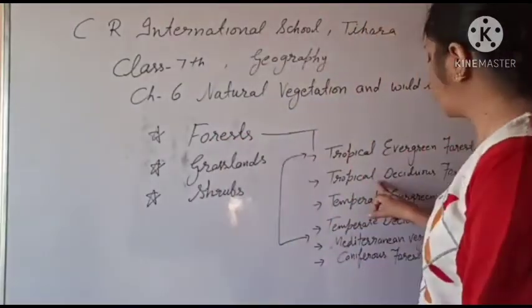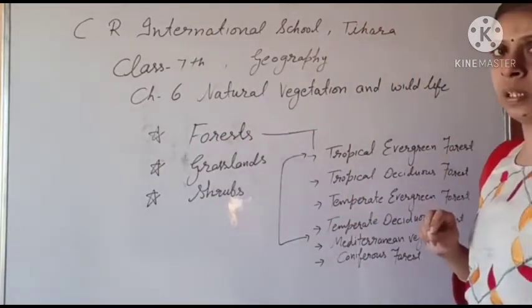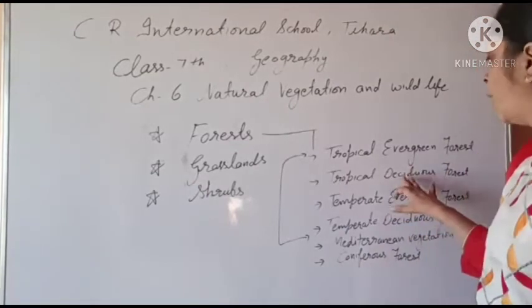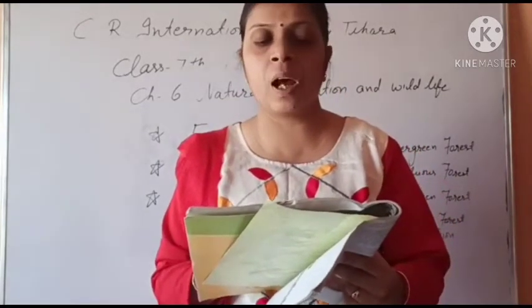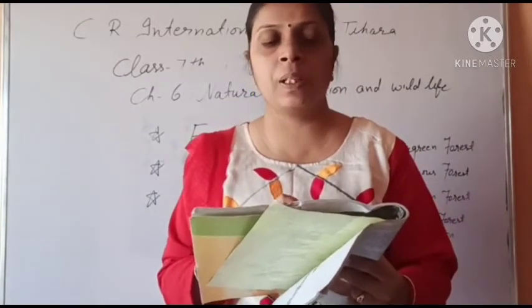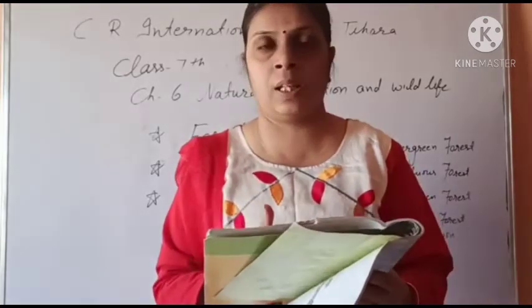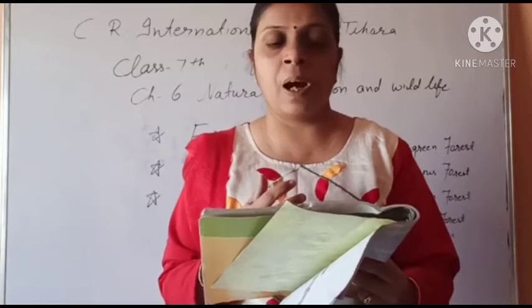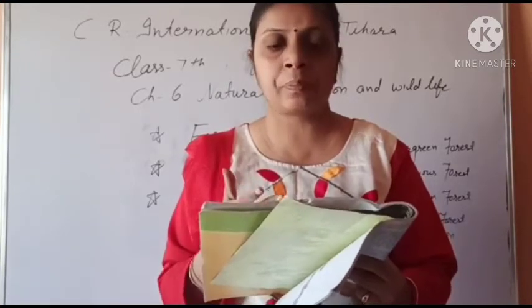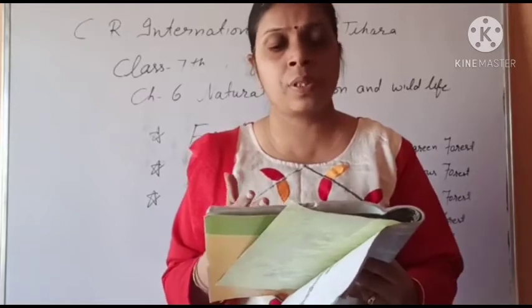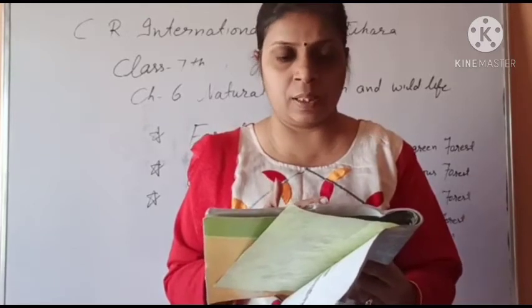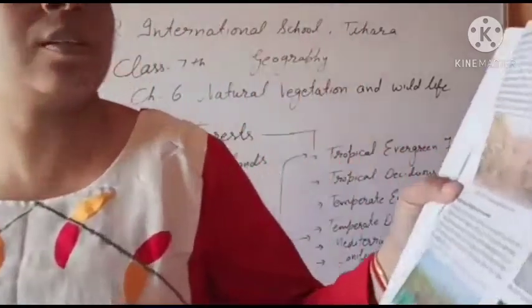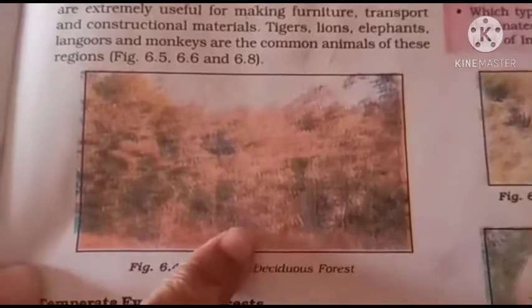Next we talk about Tropical Deciduous Forest — ocean-kati-bandhi patjhad-van — forests that shed their leaves all at once. Tropical deciduous forests are the most common forest found in the large part of India. They are also called Monsoon forests (مانسونی ون). They are found in Northern Australia and in Central America as well. Figure 6.4 shows a picture of this tropical deciduous forest.